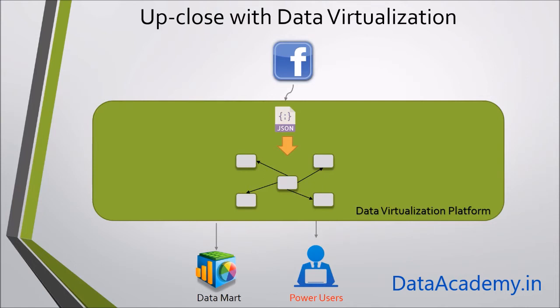These tables can then be exposed to downstream systems such as data mart or power users. Now, data mart will always have access to the latest information from Facebook, so there is no latency at all. We are not storing data, so you avoid a lot of points of failure — you have the source and you directly have the destination. Data is converted on the fly.